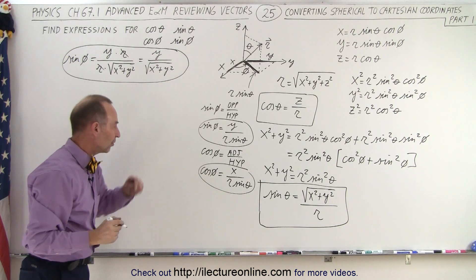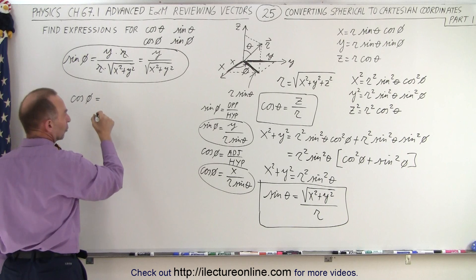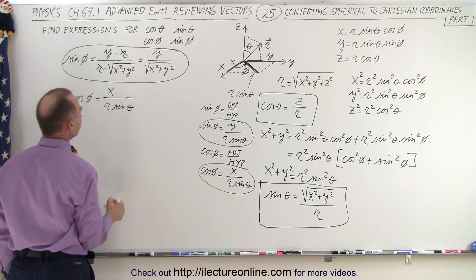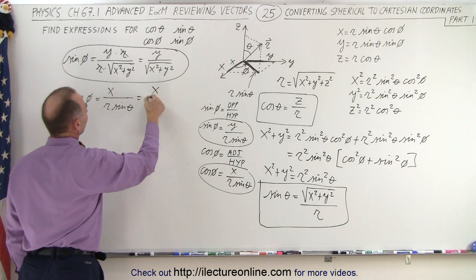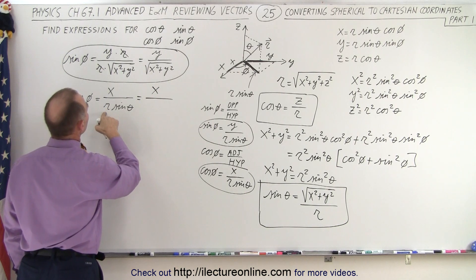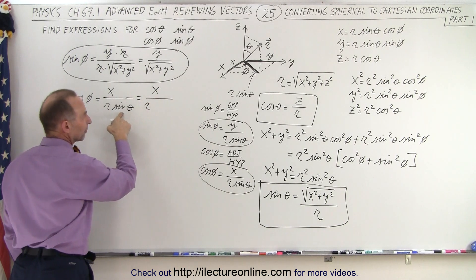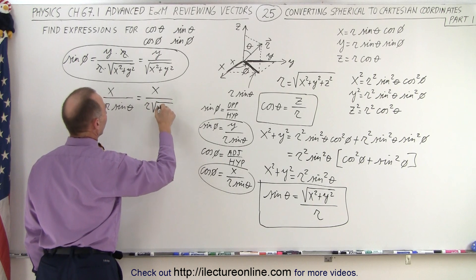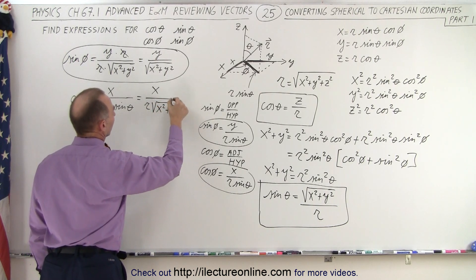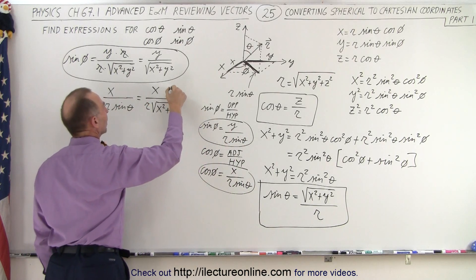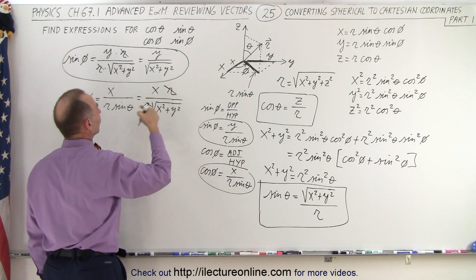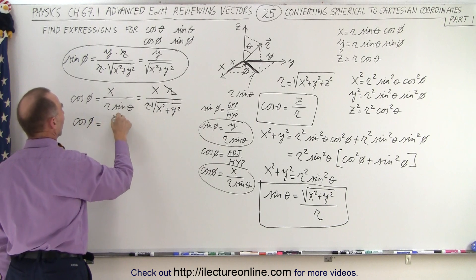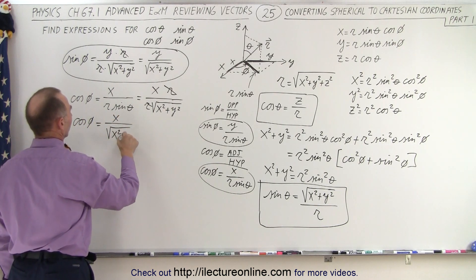Similarly, the cosine of phi equals x over r times sine of theta. Substituting the expression for sine of theta — which is the square root of x squared plus y squared divided by r — gives x divided by r times that fraction. The r's cancel out, leaving cosine of phi equal to x divided by the square root of x squared plus y squared.